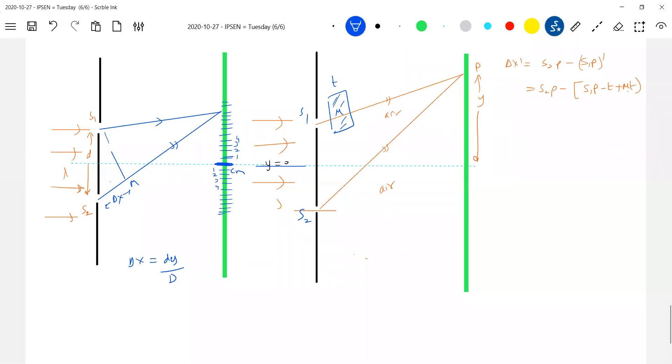So this should be equal to minus... So then what is this S2P minus S1P? That is delta x. Okay, this is equal to mu minus one T. So what is delta x dash? Delta x dash from the geometry is dy by d.